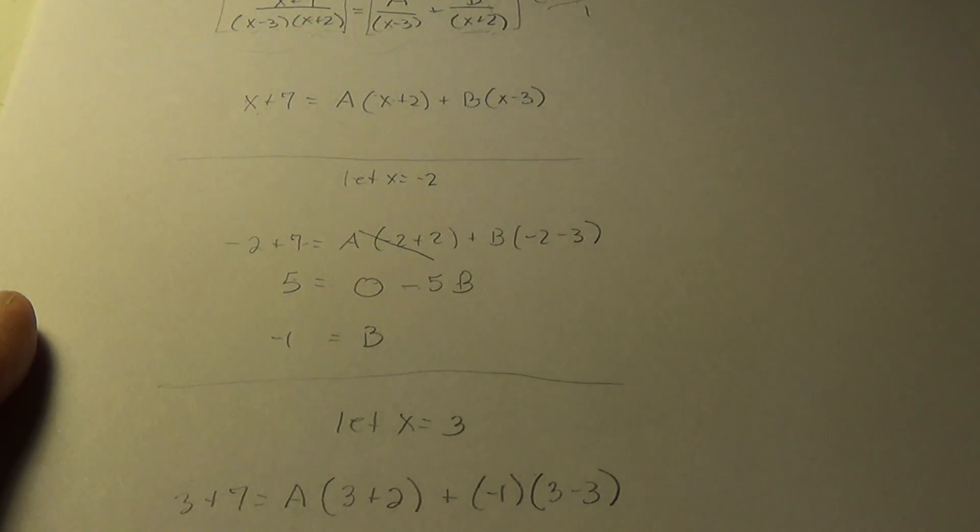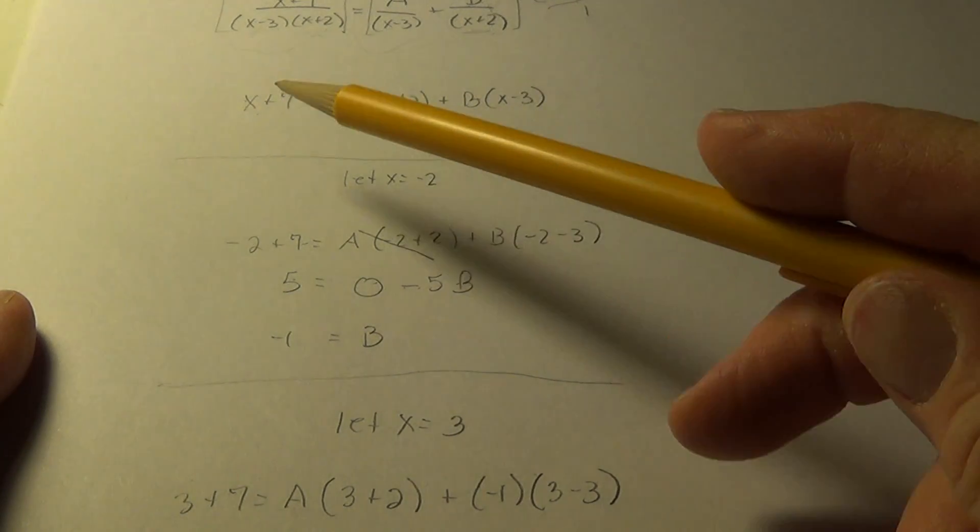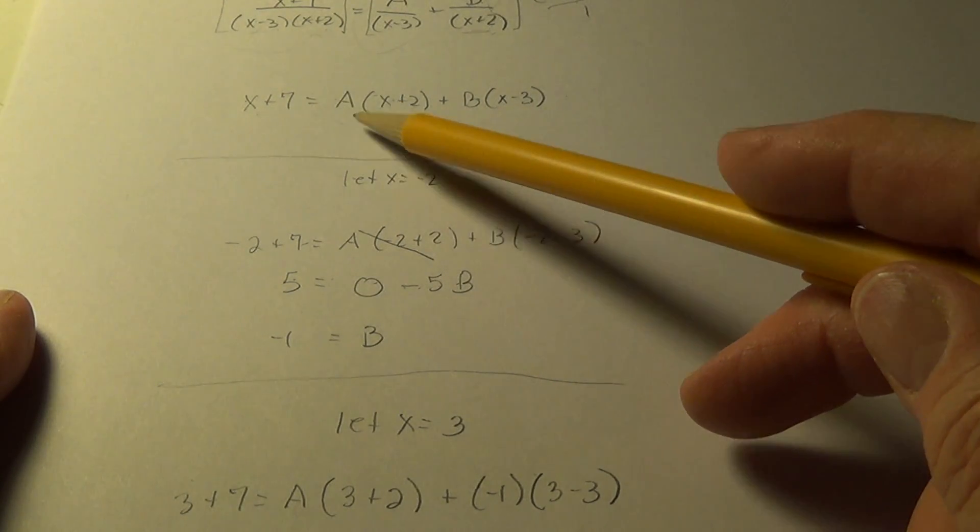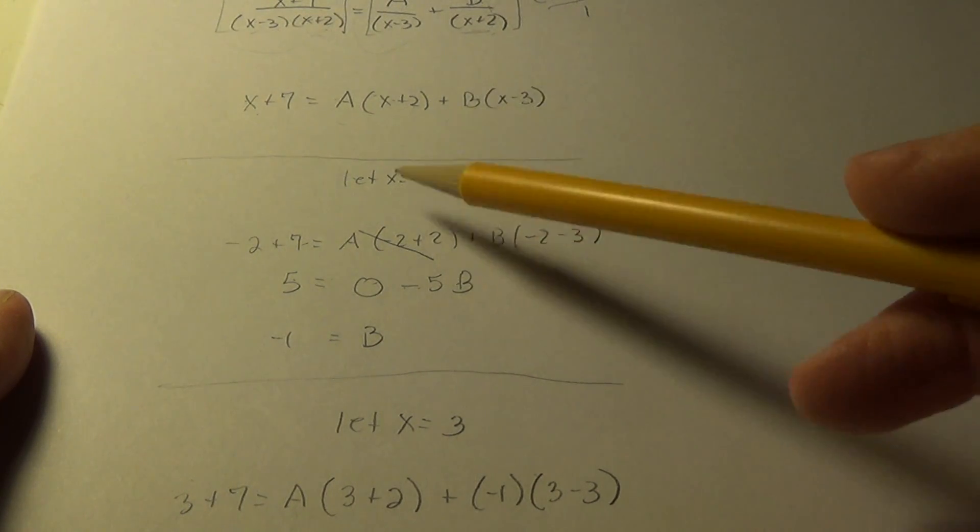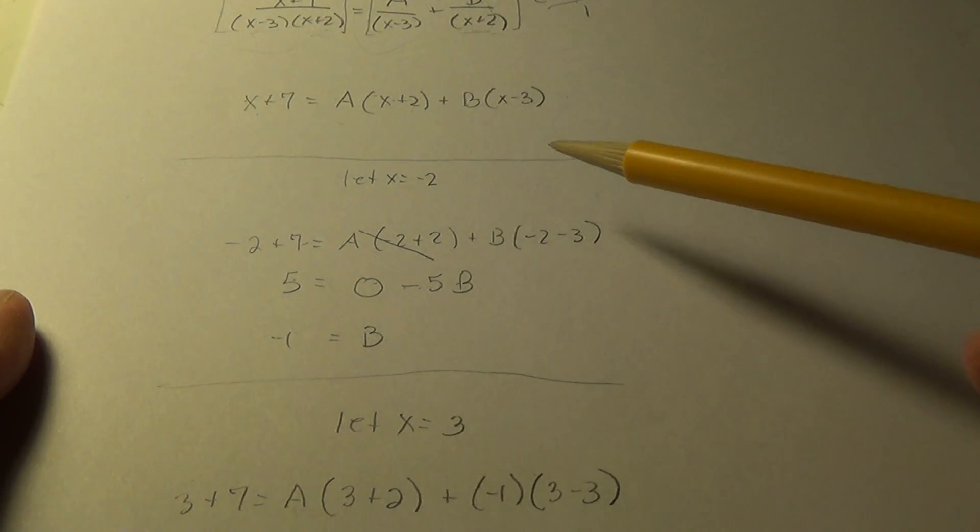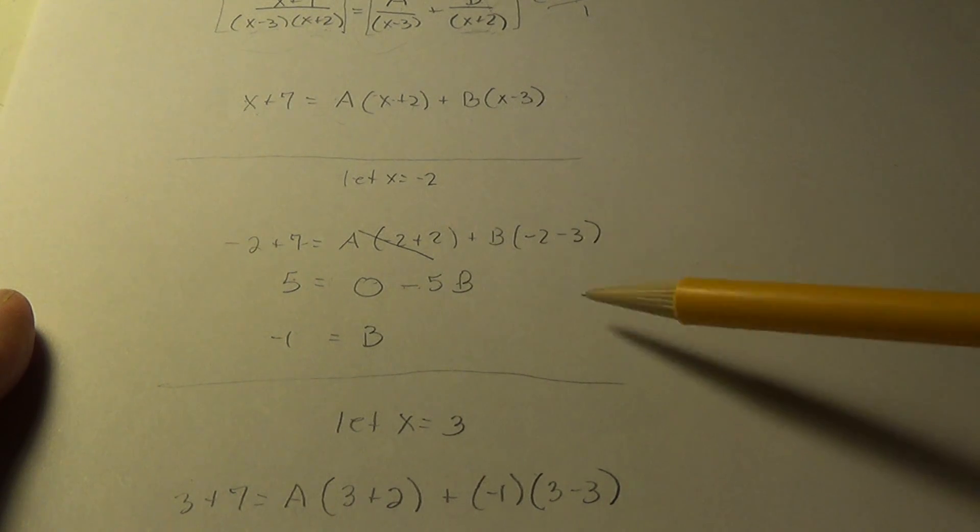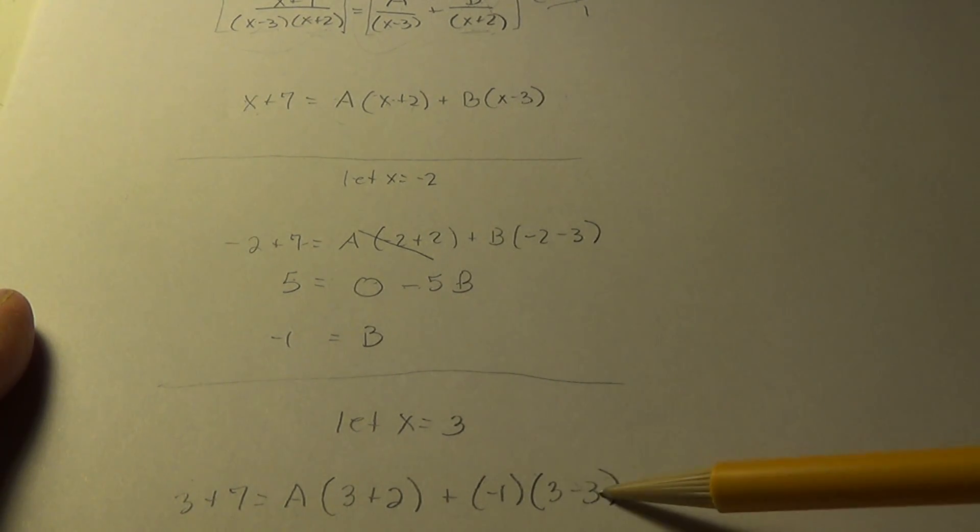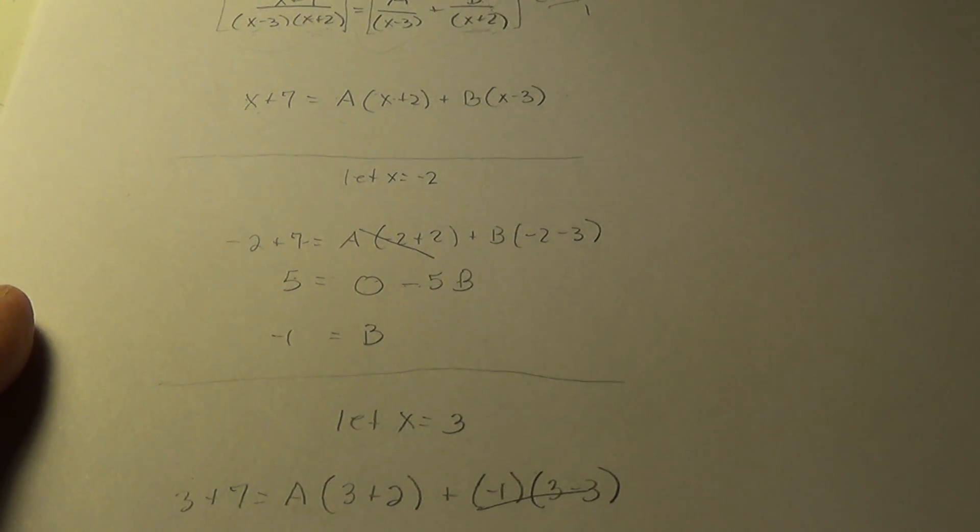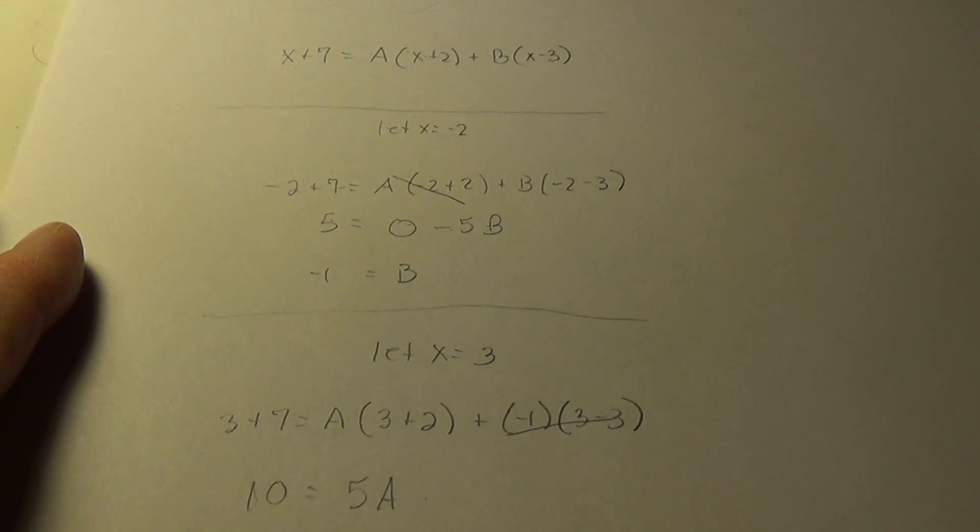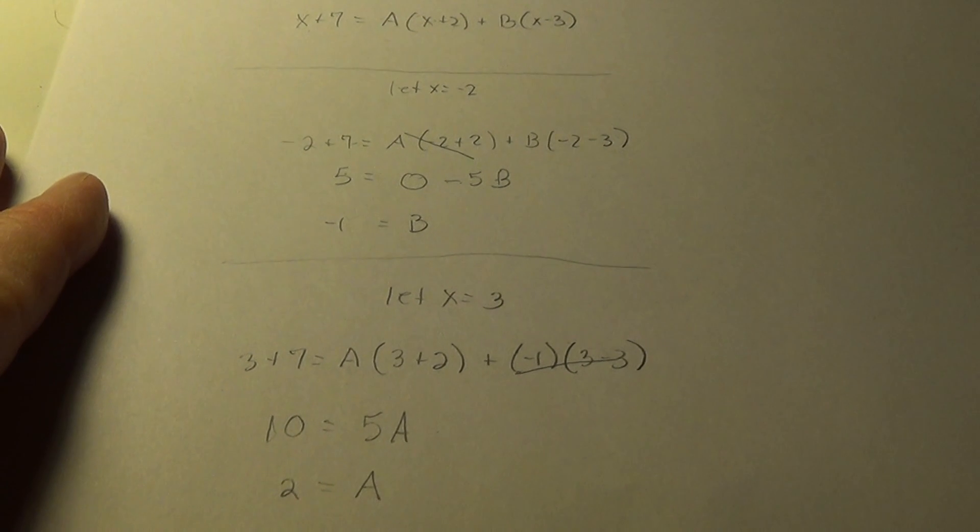When I do that, I'll notice this becomes 3 plus 7 equals a times 3 plus 2 plus b. We already know is minus 1, but to get rid of the term, simplify our work, 3 minus 3. So this zeroes out. And we have 10 equals 5a or a equals 2.